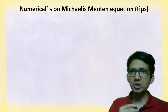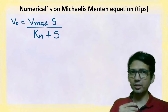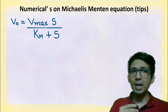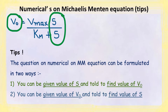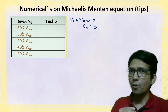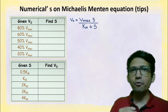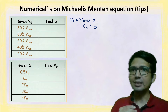Numericals on the Michaelis-Menten equation. This is the Michaelis-Menten equation which all of you are familiar with. Let's discuss what type of numericals can be asked based on this equation. In this equation, you can play with the value of v0 or the value of substrate concentration s, while the value of km remains constant. We can summarize the question types in a table: you can be given v0 to find s, or given s to find v0.